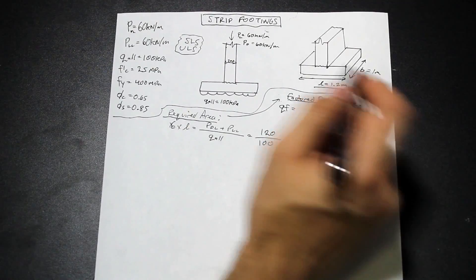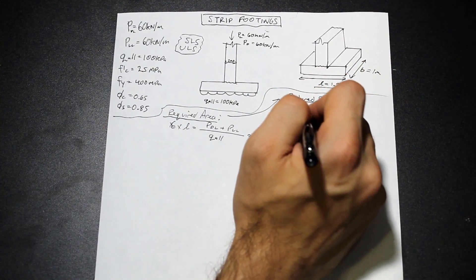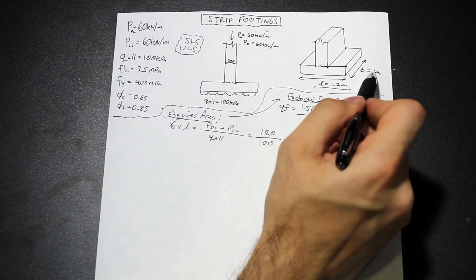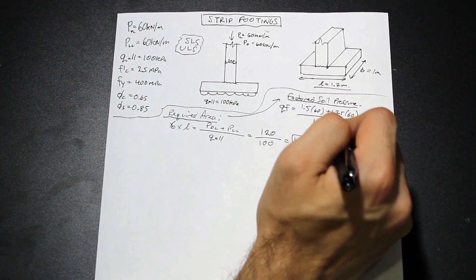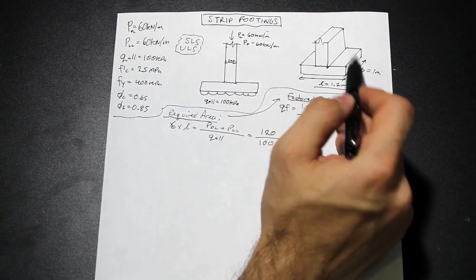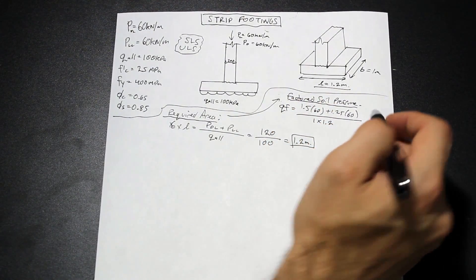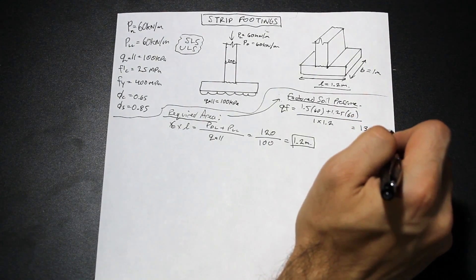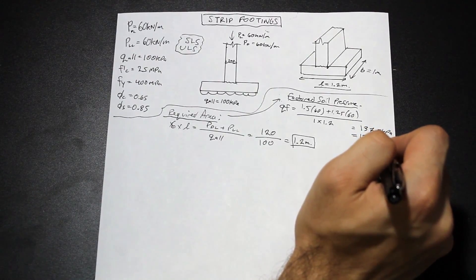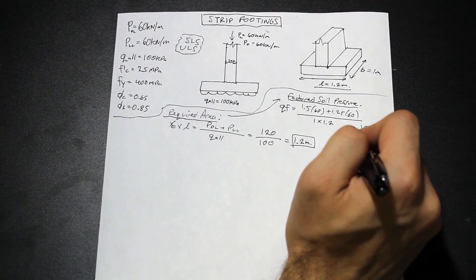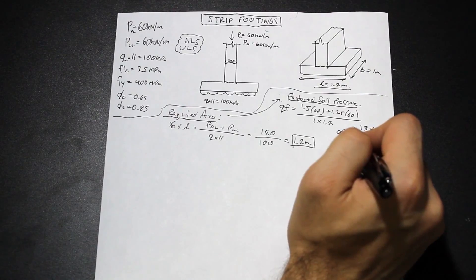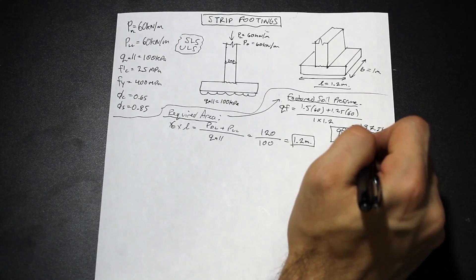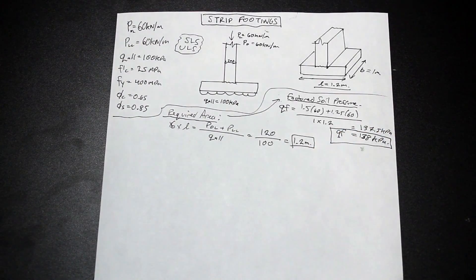So 1.5 live, 1.25 dead. In your country, it might be something different. And that's over the area. So the area is going to be 1 times 1.2, the actual area of our per meter strip footing. So that is simply going to be equal to 137.5 kPa. And let's just round up and we'll say 138 kPa. So 138 kPa is the value we're going to use to size our footing, its thickness, and make sure that our flexural design is good. So let's come down over here.